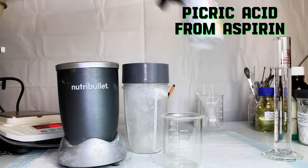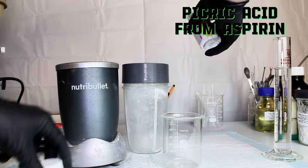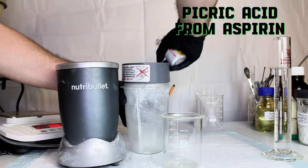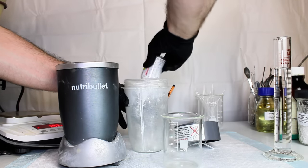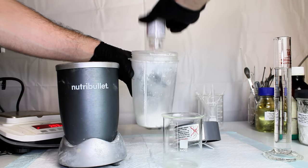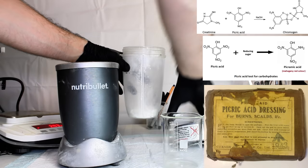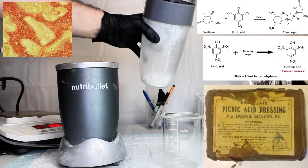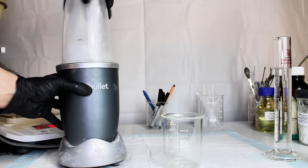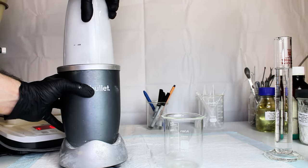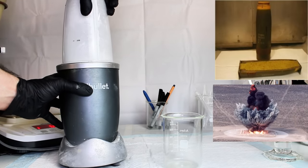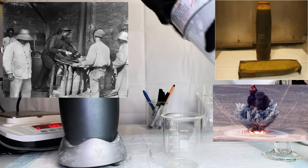Today I'm going to make the chemical picric acid from this bottle of aspirin I picked up at Walmart. Picric acid is a strongly nitrated organic compound that's been used historically as a blood test for creatine, an antiseptic, and a biological stain. However, the most common use of this chemical by far has been in manufacturing explosives, particularly during the First World War.